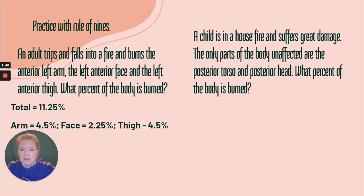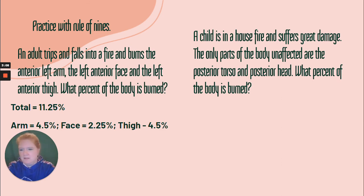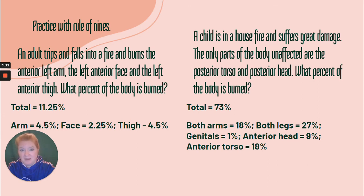A child is in a house fire and suffers great damage. The only parts of the body unaffected are the posterior torso and posterior head. What percent of the body is burned? Here's how you would calculate it: both arms, both legs, the genitals, the anterior head, and the anterior torso. That is a huge percentage of the body.